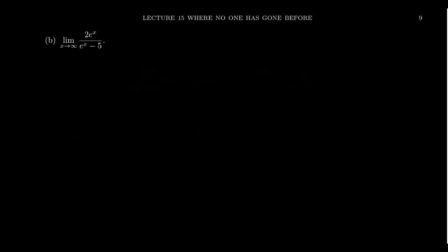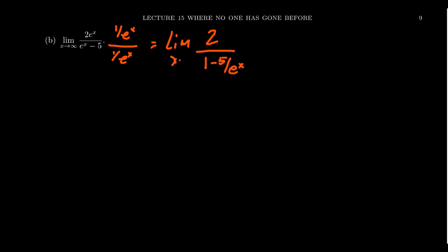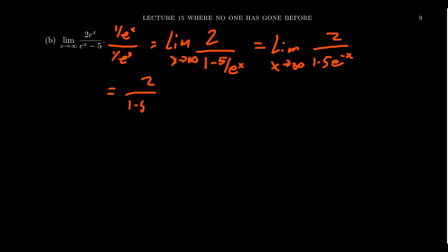Consider the limit as x goes to infinity of 2e to the x over e to the x minus 5. We handle this like rational functions: multiply numerator and denominator by 1 over e to the x. The top gives 2, and the bottom gives 1 minus 5 times e to the negative x. Plugging in infinity, e to the negative infinity is zero, so we get 2 over 1 minus 0, which equals 2.